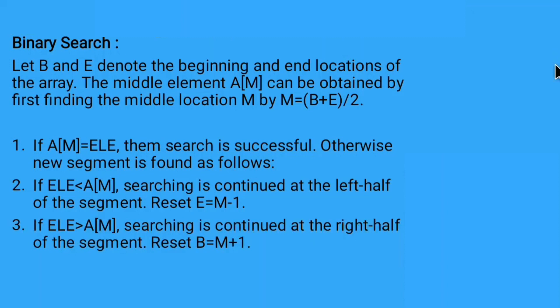The third criteria: if the element is greater than a of mid, then search is continued on the right half of the segment by resetting b equal to m plus 1. So that is, the middle point is acting as a beginning and we are moving on to the right hand side by adding 1 — m plus 1.